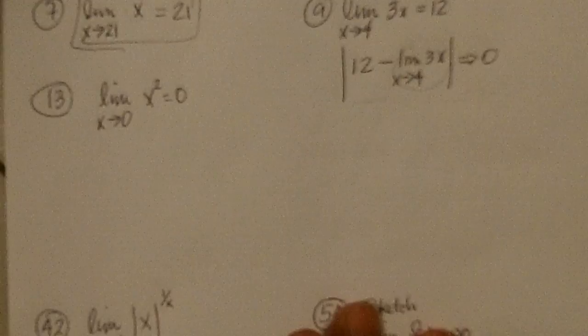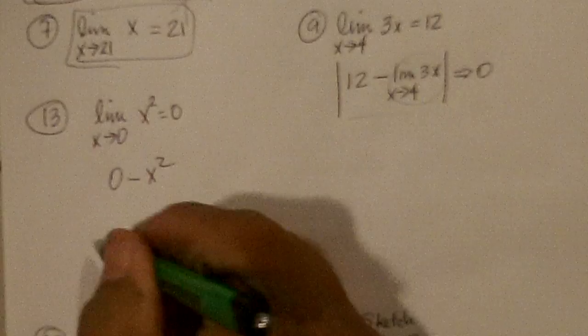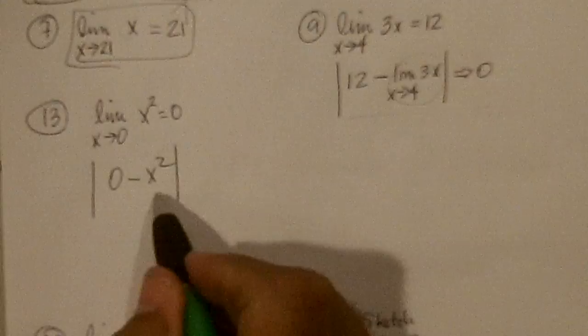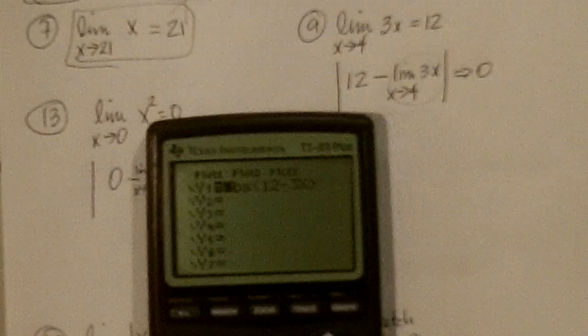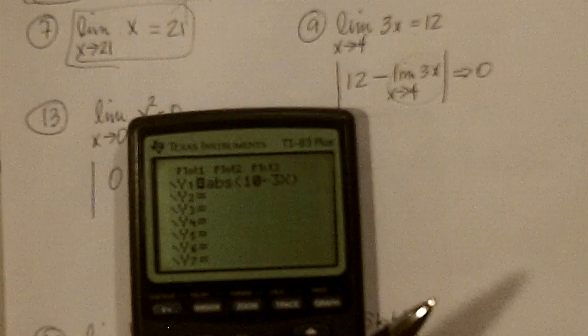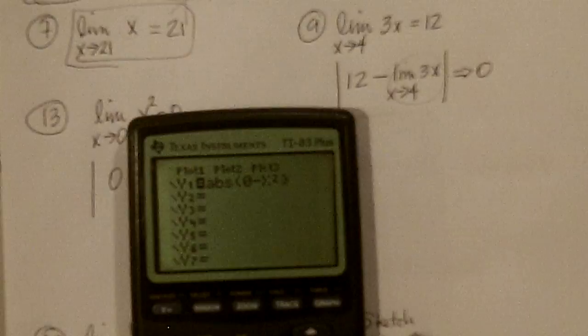13, they want us to do pretty much the same thing on this, so we'd have 0 minus x squared as the limit of x squared as x approaches 0, and so if we typed that into y1, 0 minus x squared, absolute value of 0, 0 minus x squared, delete that, and quit,